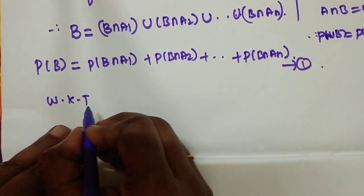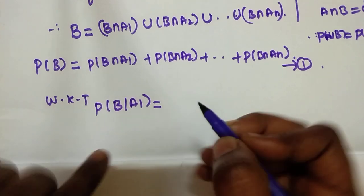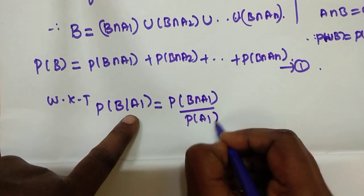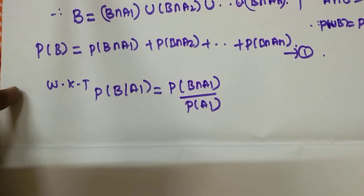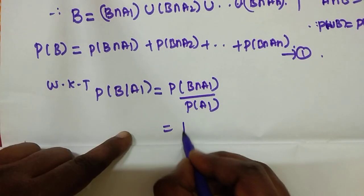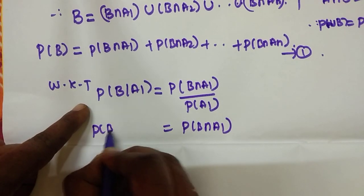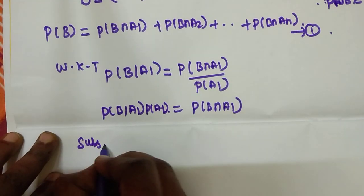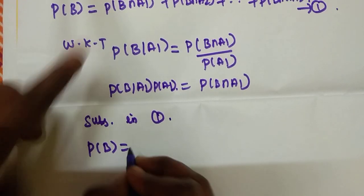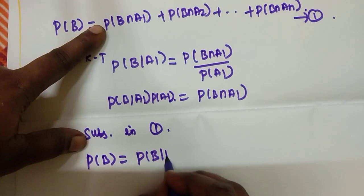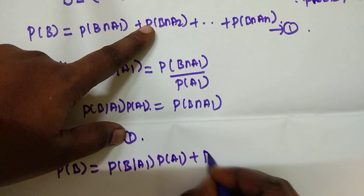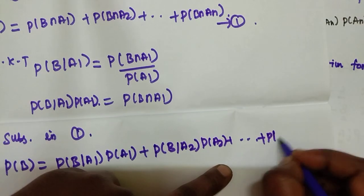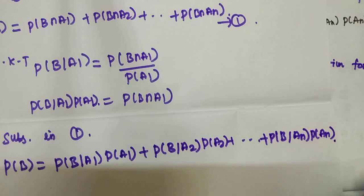The probability of B intersection A1 divided by P of A1 gives us P of B given A1. Substituting in equation 1, we get P of B equals P of B given A1 into P of A1 plus P of B given A2 into P of A2 plus so on to P of B given AN into P of AN. Hence proved.